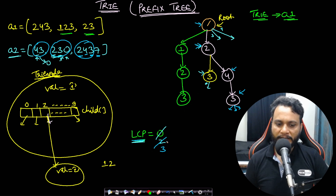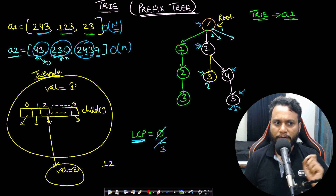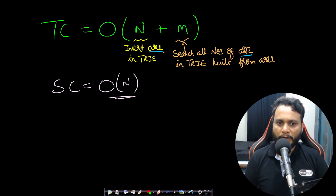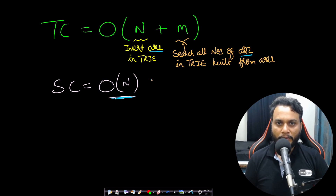For time complexity: inserting each number into the Trie is linear time, so inserting all n numbers from array 1 is O(n). Similarly, searching all m numbers from array 2 is O(m). Total time complexity is O(n + m), where n is the time to build the Trie from array 1 elements and m is the time to search all array 2 numbers. Space complexity is O(n) because the Trie stores all numbers from array 1. Now let's look at the code.